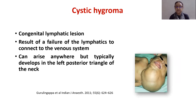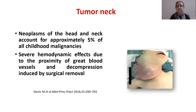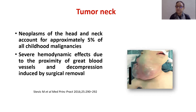Cystic hygroma is a congenital lymphatic lesion resulting from failure of the lymphatics to connect to the venous system, so that lymph collects in various pockets and the swelling enlarges, ultimately compromising the airway. It can arise anywhere but typically develops in the left posterior triangle of the neck. Neck tumors — neuroblastomas — account for approximately 5% of all childhood malignancies, and severe hemodynamic effects can occur due to the proximity of great blood vessels and decompression induced by surgical removal, so blood loss during surgery must be carefully managed.